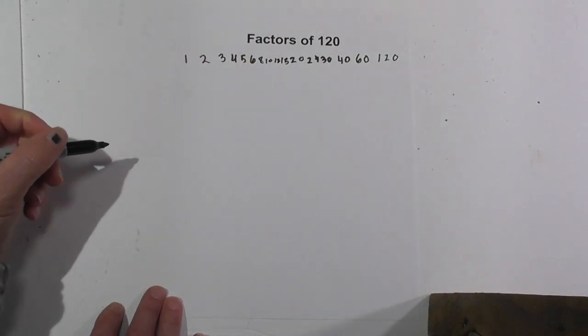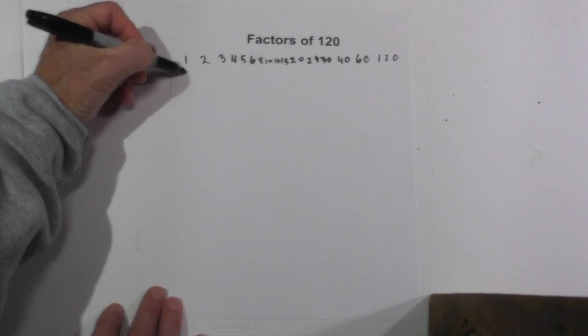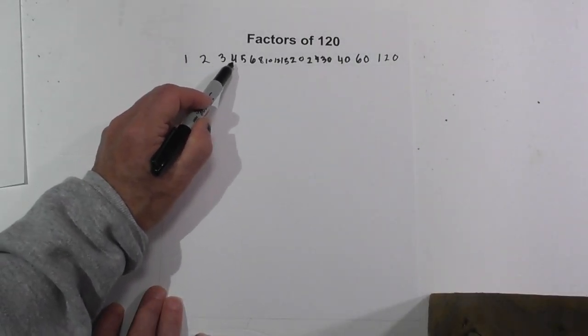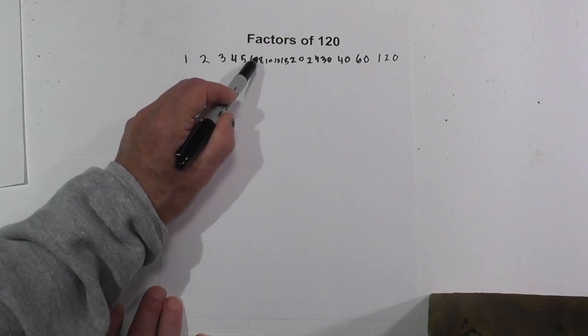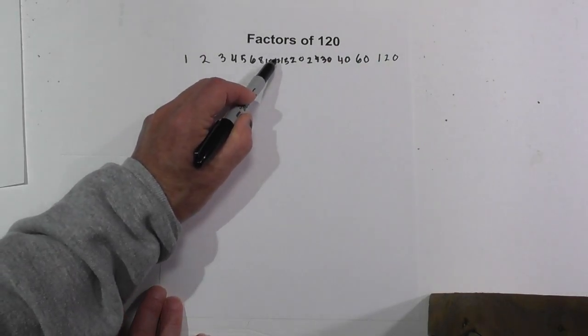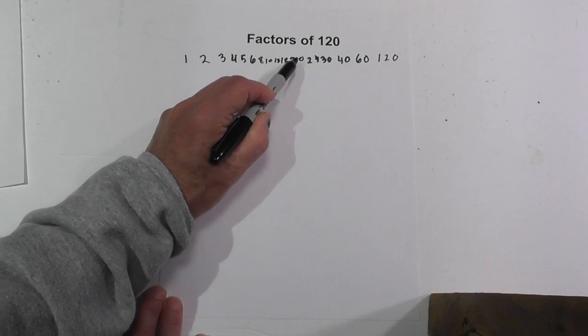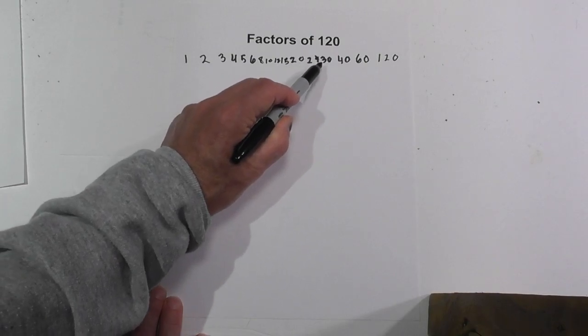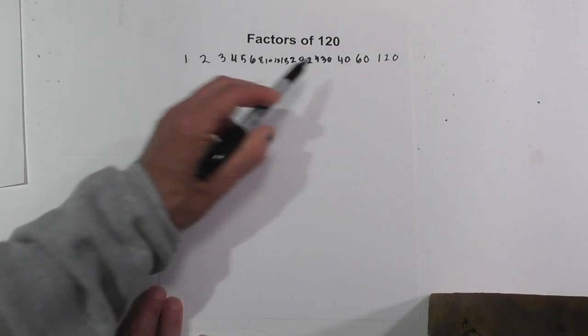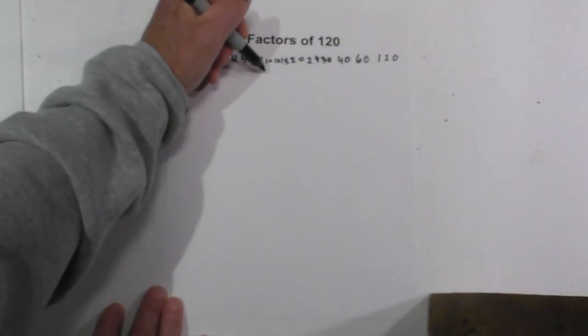So the factors are 1, 2, 3, 4, 5, 6, 8, 10, 12, 15, 20, 24, 30, 40, 60, and 120. And in pairs it looks like this: